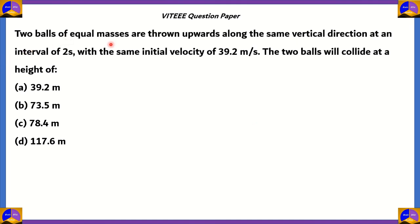Two balls of equal masses are thrown upward along the same vertical direction at an interval of two seconds, with the same initial velocity of 39.2 meters per second. The two balls will collide at a height of: a) 39.2 meters, b) 73.5 meters, c) 78.4 meters, or d) 117.6 meters. Which of these is the correct option?